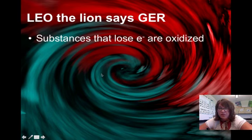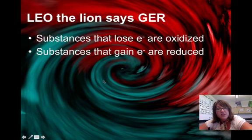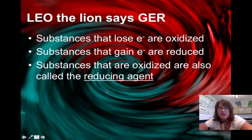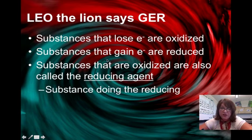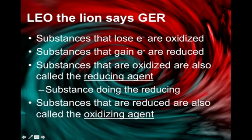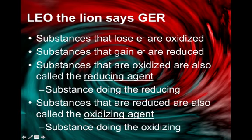Substances that lose electrons are oxidized. Anything that gains an electron is said to be reduced. Something that is oxidized is called the reducing agent because it caused the reduction in the other thing. It is the substance that does the reducing. A substance that is reduced is called the oxidizing agent because it caused the oxidizing on the other substance. Make sure that you know your terminology and answer the question I ask. If I ask you what thing is oxidized, that's different than asking you what the oxidizing agent is. In fact, it's completely the opposite thing.